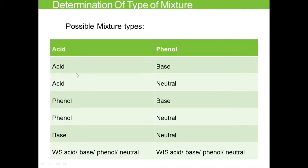What are the possible types of mixtures depending on the chemical nature of the components? If one component is a water-insoluble acid, you could have: acid with phenol, acid with base, or acid with neutral. Similarly, if one component is a phenol: phenol with base, phenol with neutral. A base could pair with acid, phenol, or neutral. The seventh type — a water-soluble acid, base, phenol, or neutral with a water-insoluble component — will be dealt with in a separate video, as this video covers only chemical method separation.